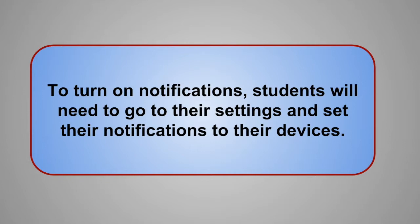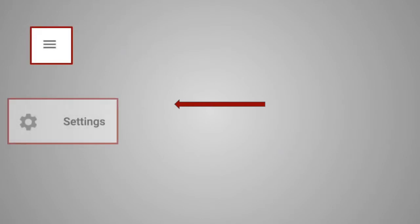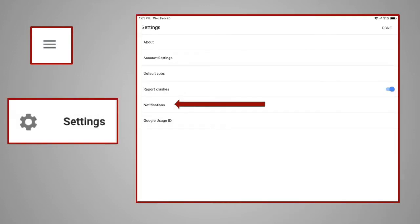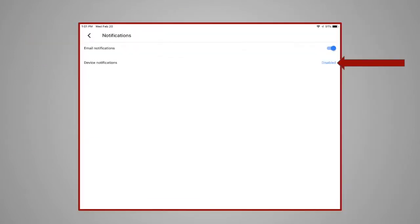After students are in Google Classroom, they will need to go to the upper left and click on the three lines. At the bottom of the menu that pops up is Settings. Students will then click on Settings and be directed to a list, and will then click on Notifications.